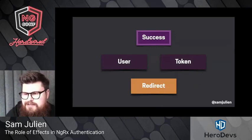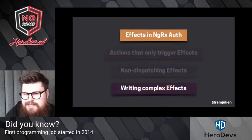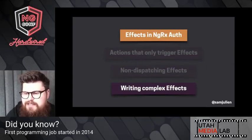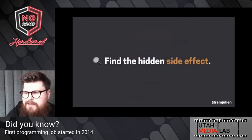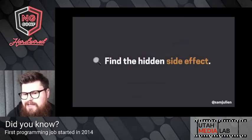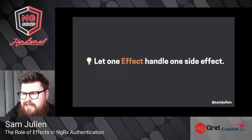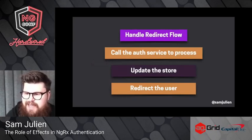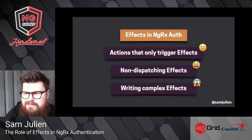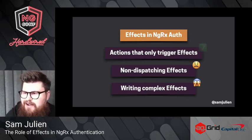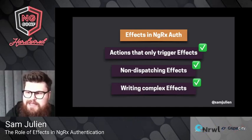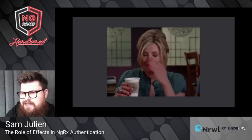All three common struggles show up when implementing auth in NgRx. We found the first two just when clicking the login button — to overcome this, remember that effects function as a task runner, identify where the side effects are, and identify where the store is being updated. Then we found the complex effect when handling the redirect, getting the user and token, and sending them to a new place. When you run into complex effects: back up and find the hidden side effect you've taken for granted, break the complex effect into smaller pieces so one effect handles one side effect, and write out the flow to distinguish tasks from state updates.